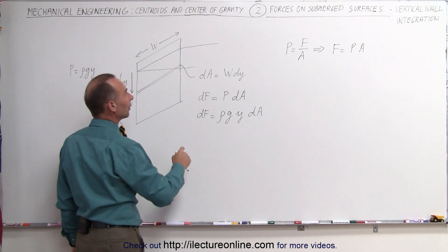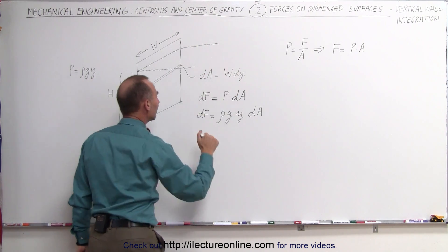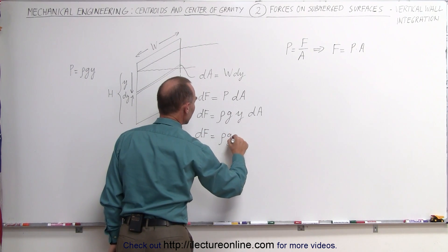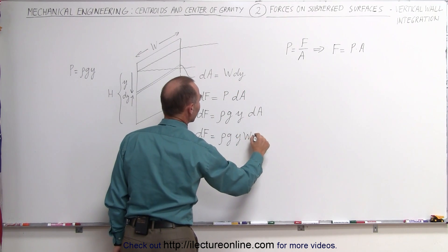And dA can be written as the width times dY, so dF is equal to the ρ times g times y, instead of dA, we can write the width times dY.